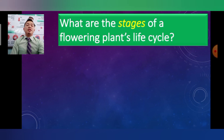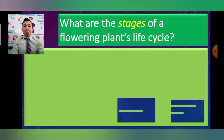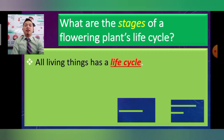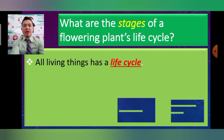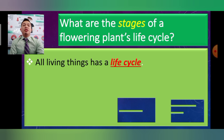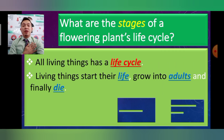Now let's learn about the stages of a flowering plant's life cycle. All living things have a life cycle — including myself, yourself, your father and mother, grandfather, and even your ancestors. All living things start their life, grow into adults, and finally die. The same applies to plants.